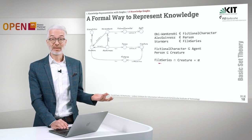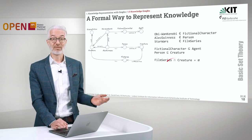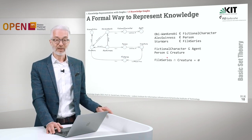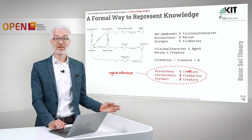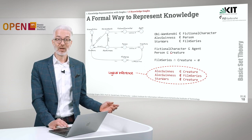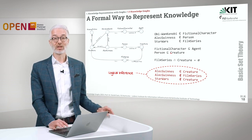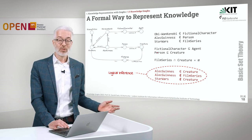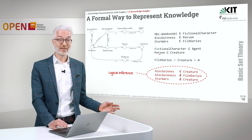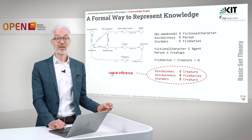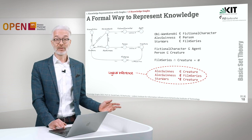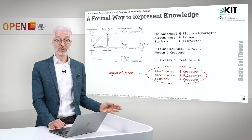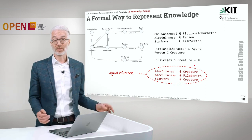If they are disjoint, this means no film series can be at the same time a creature. If I have this knowledge represented and use a logical reasoner, what I can find out immediately is that Alec Guinness is also a creature — simply because Alec Guinness is a person, and person is a subclass of creature. If a person is a subclass of creature, every instance of the class person is at the same time an instance of the class creature, by definition of subclass. We can also deduce that Alec Guinness is not a film series, and Star Wars is not a creature — simply by looking at this disjointness statement that film series and creature have nothing in common.